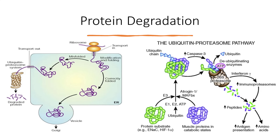Finally, protein degradation. Protein degradation also occurs when the protein is translated. Sometimes the protein translation is not done properly, and sometimes external factors damage the protein. In such cases, the protein will undergo the process of degradation. Most protein degradation is carried out when a ubiquitin chain attaches to the protein, signaling the proteasome to recognize the protein that needs to be degraded. Once the ubiquitin chain is attached, the proteasome will degrade the ubiquitinated protein into amino acids, and the protein will lose its function.